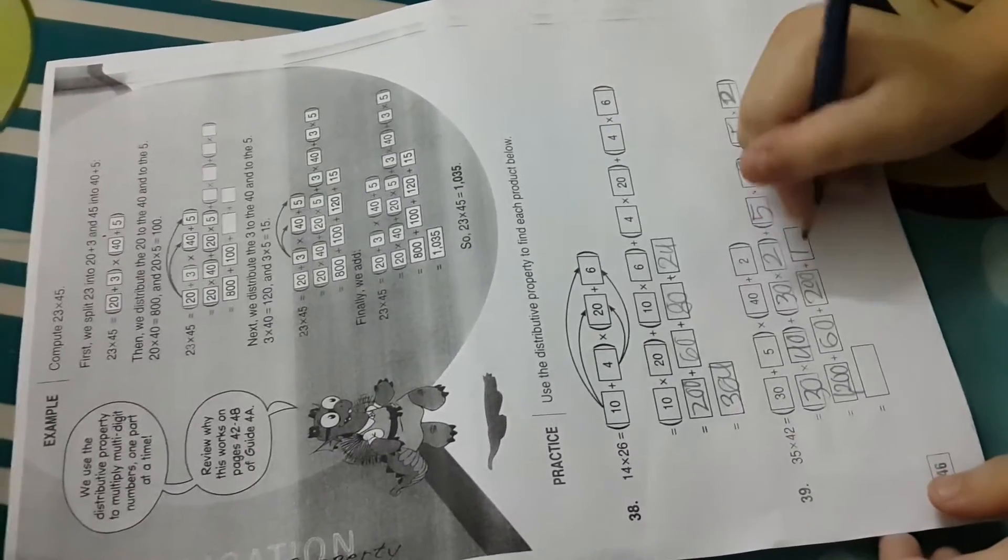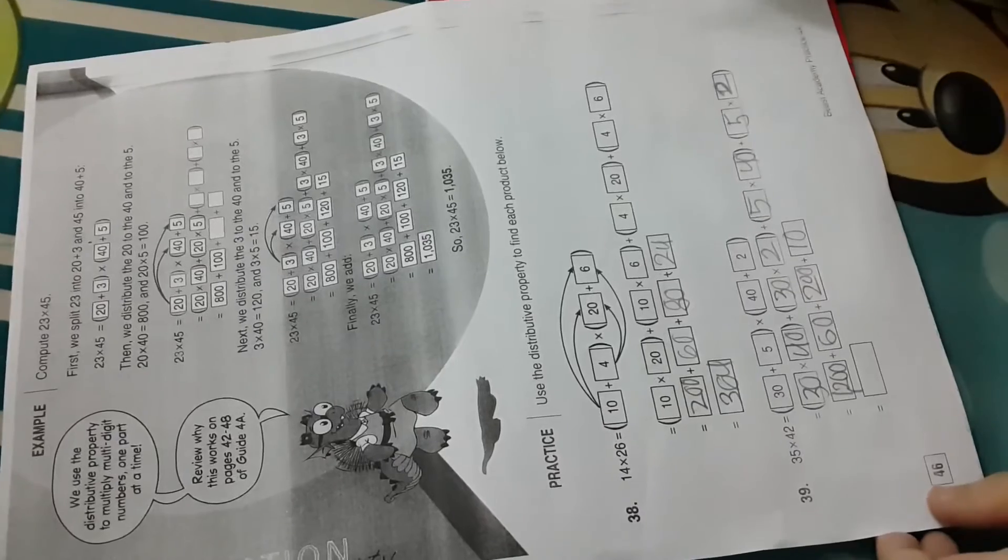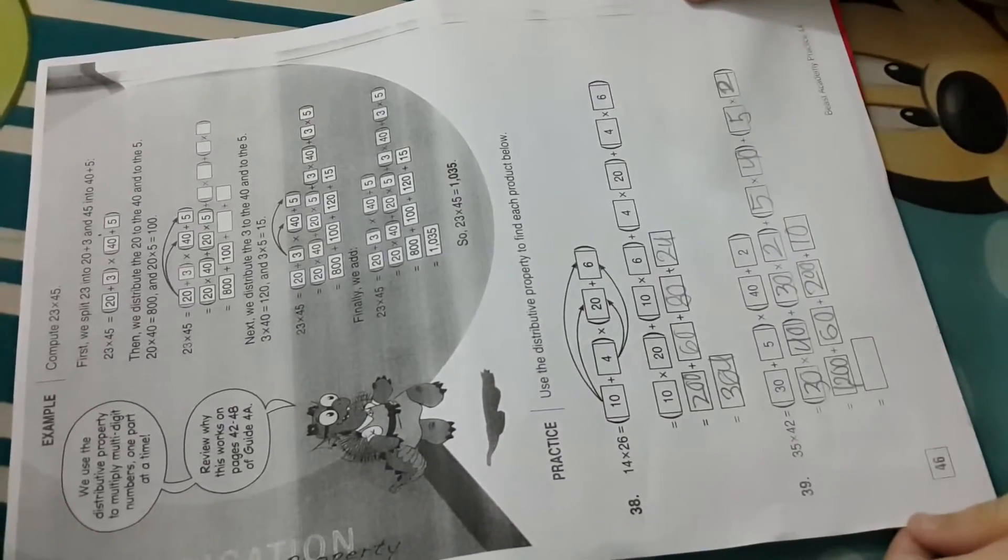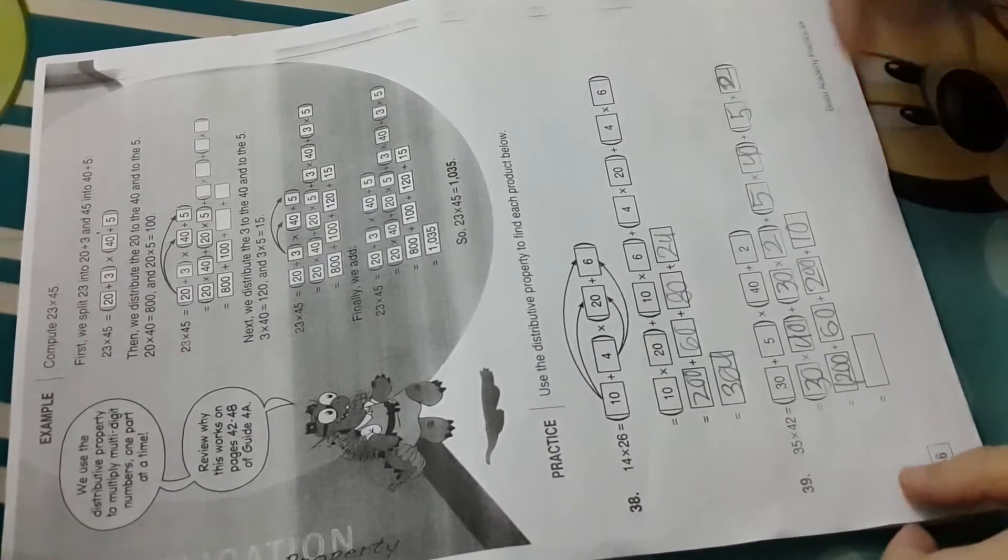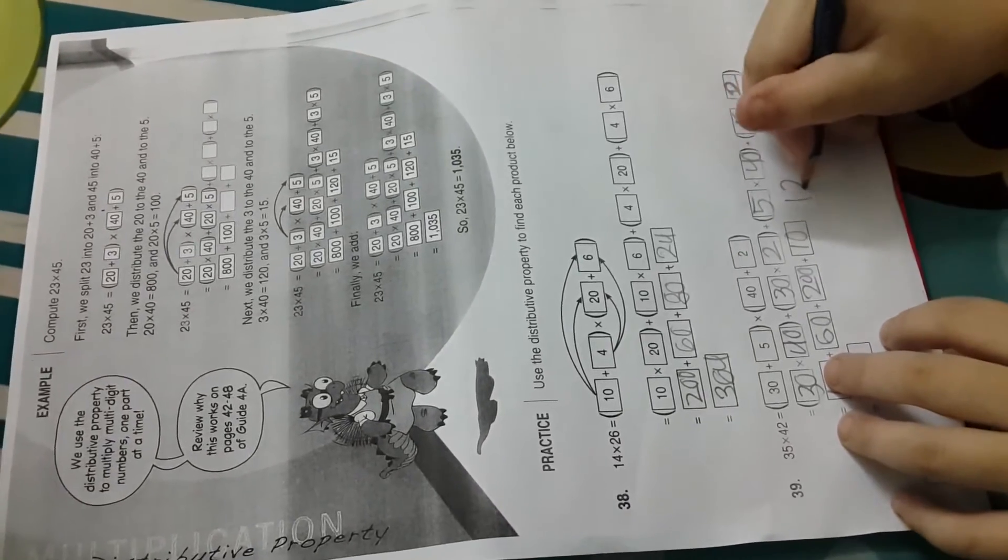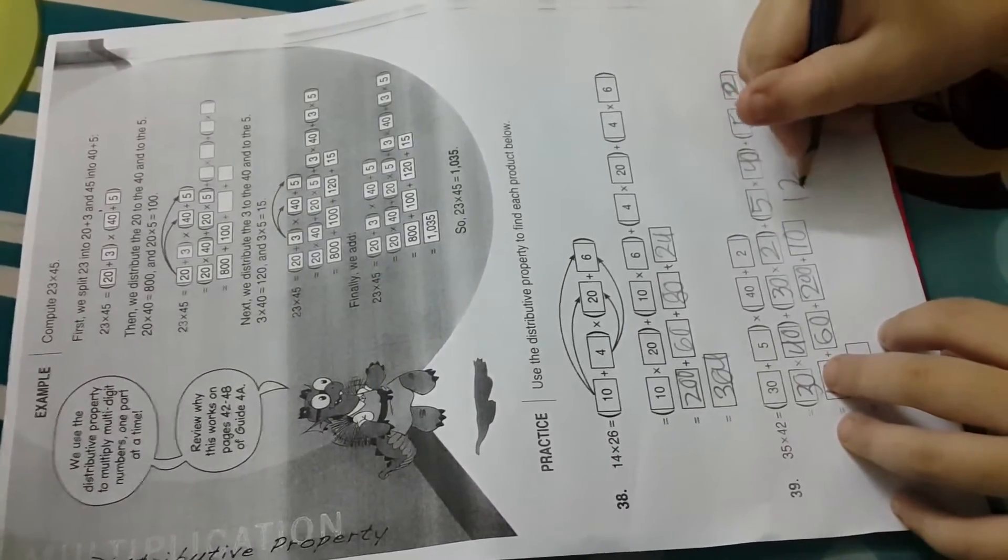What's the last one? Oh, 5 times 2. Okay. So 10 plus 1,200 is 70. Do you want to write it out to the side to be clear? That's a good idea.